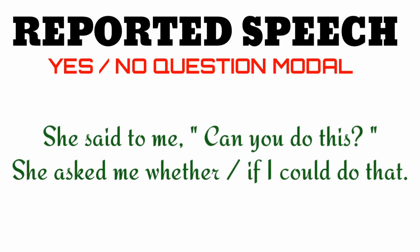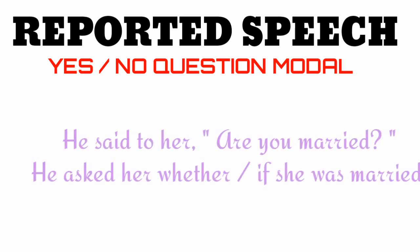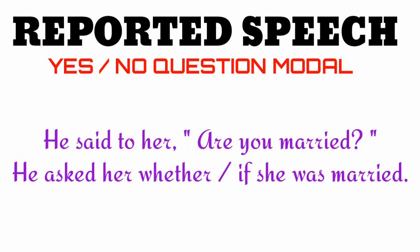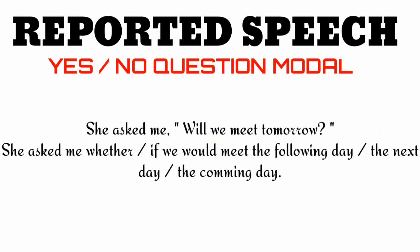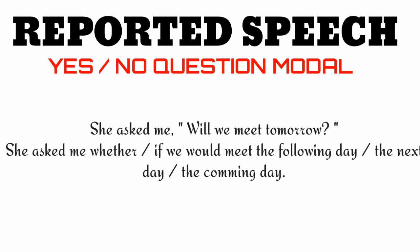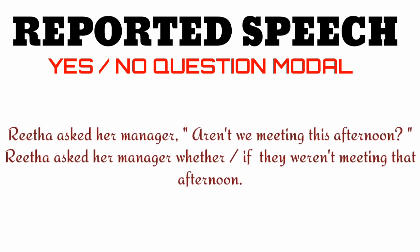Further examples: 'She said to me, can you do this?' → She asked me whether or if I could do that. 'He said to her, are you married?' → He asked her whether or if she was married. 'She asked me, will we meet tomorrow?' → She asked me whether or if we would meet the following day, or the next day, or the coming day. 'Rita asked her manager, aren't we meeting this afternoon?' → Rita asked her manager whether or if they weren't meeting that afternoon.